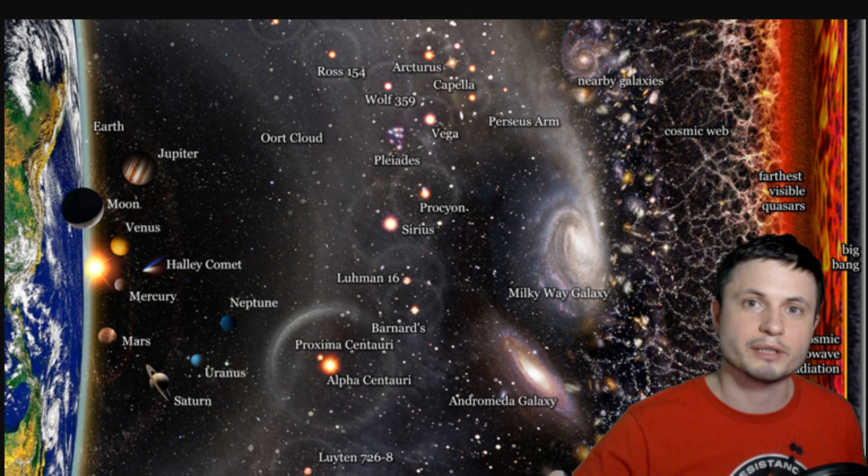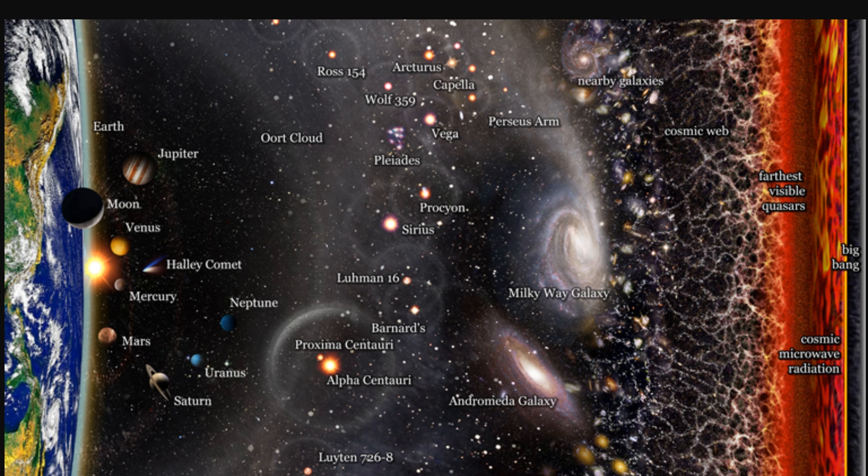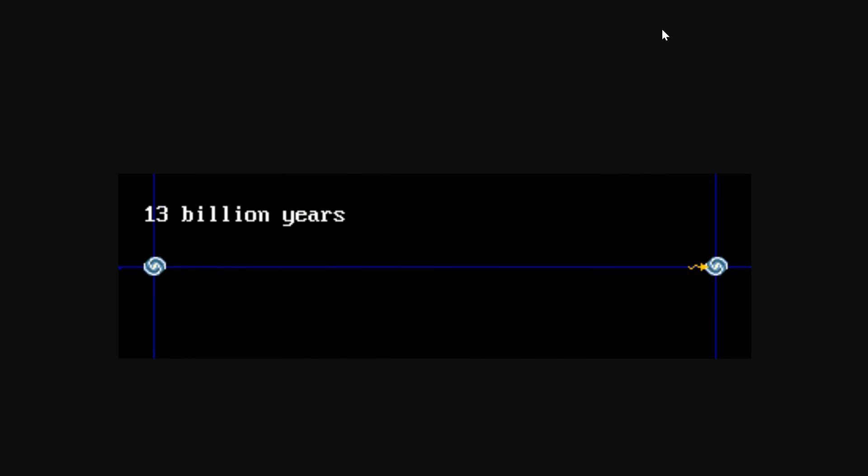And the so-called visible universe refers to the fact that essentially, if you were to look away from us in every single direction, there's a physical limit to how far we can actually see. Since the universe is expanding, and since the light has very limited speed,